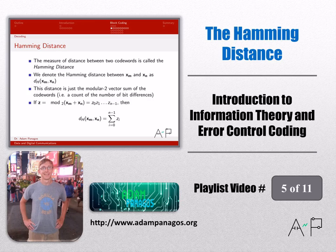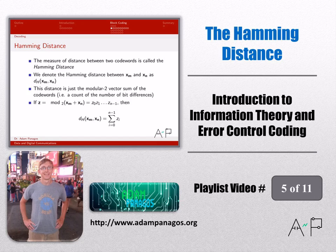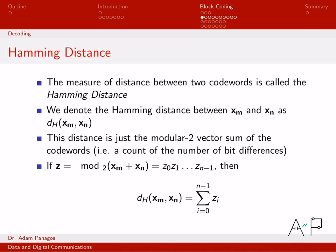Before we get into the full formal derivation of the optimal decision rule for these type of error control codes called block codes, we need to introduce one more little definition. It's called the Hamming distance. This is going to let us quantify exactly what we mean by how close words are to each other or code words are to each other.